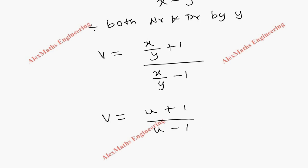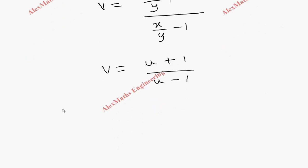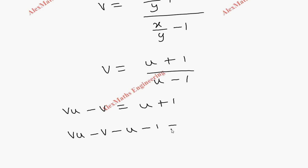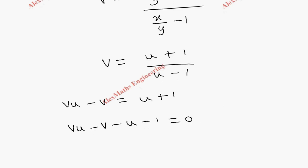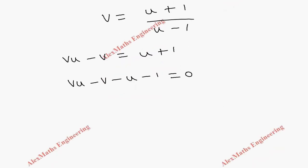Let's cross multiply: this becomes vu − v = u + 1. Bringing everything to one side: vu − v − u − 1 = 0.